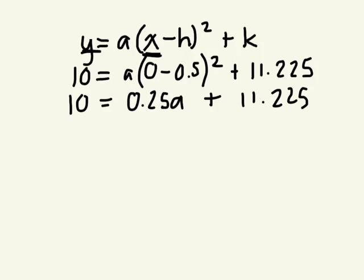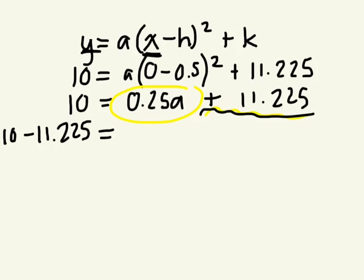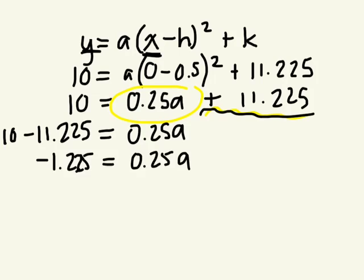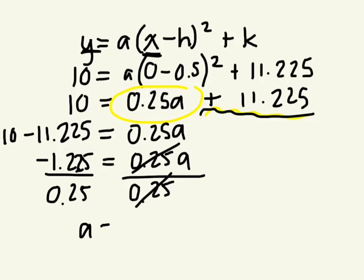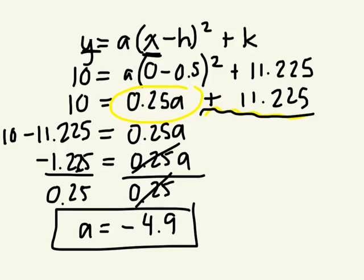Don't forget that this is a term. We want to remove this positive 11.225. How do I remove that? I need to move this to the other side. We subtract it. And then we have 0.25A. Then we divide it. Simplify and now we divide to isolate the variable. So what is A equal to? Negative 4.9. And think about it. The graph that we had just sketched, did it open up or down? Found A.